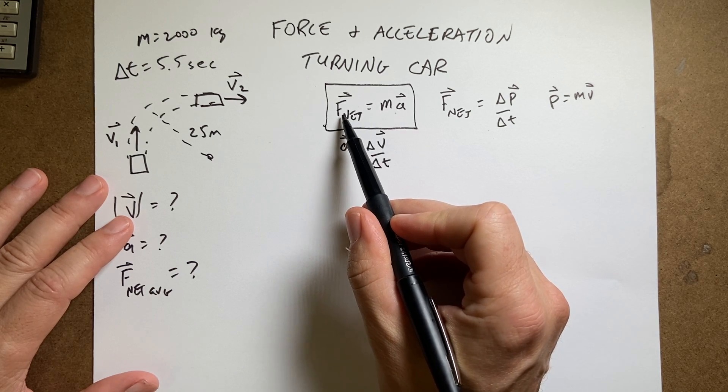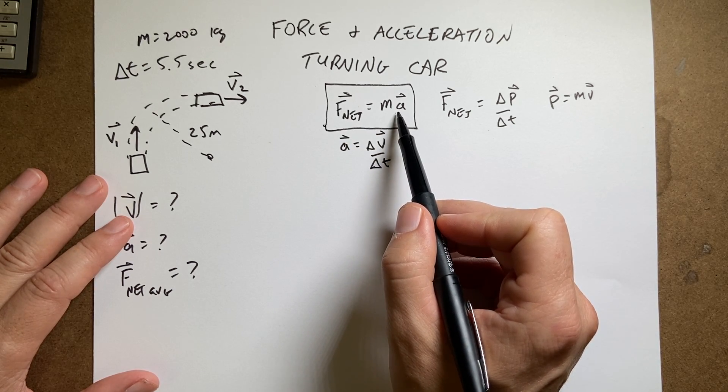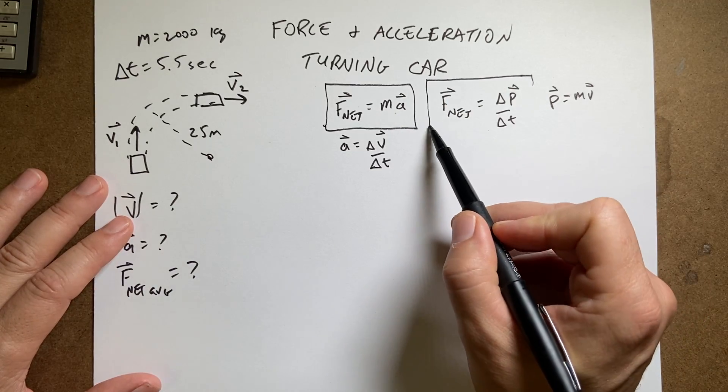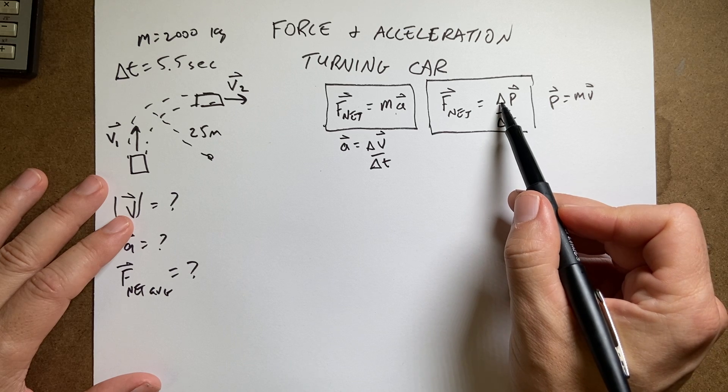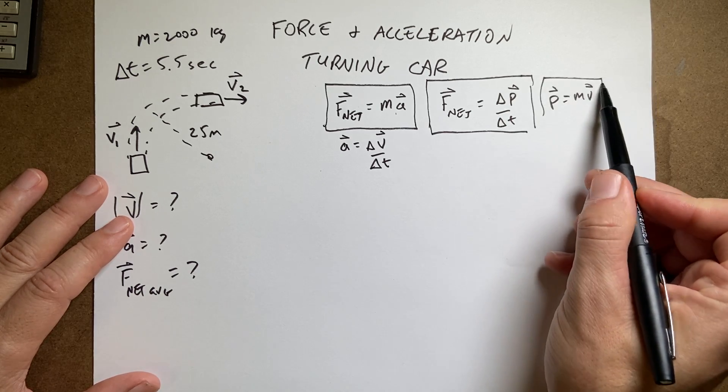This says that the total force, vector force on an object is equal to the mass times acceleration. Now there's another way to write that, as the total force on an object is equal to the change in momentum with respect to time, where momentum is mass and velocity.